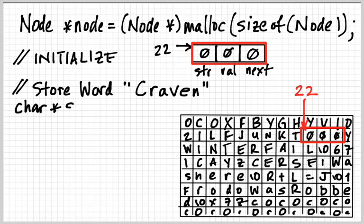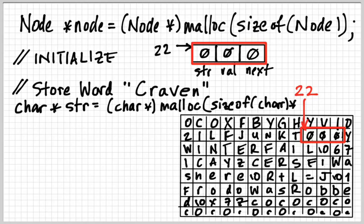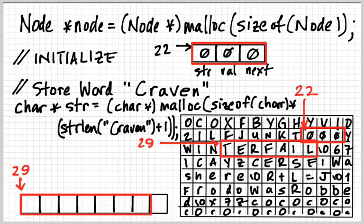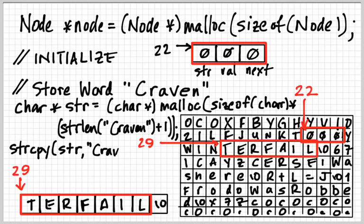If you want to think of it this way, I want to allocate memory the size of a char times the length of craven plus one. So that's going to allocate craven since it's six long, plus one is seven. So seven elements the size of char. So I'm going to get a block in memory that's going to be this big, and malloc told me that that is at location 29 inside of the heap.